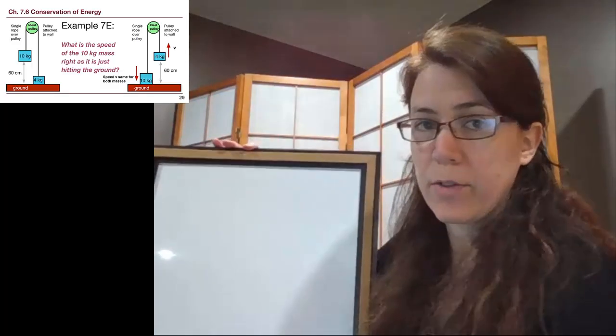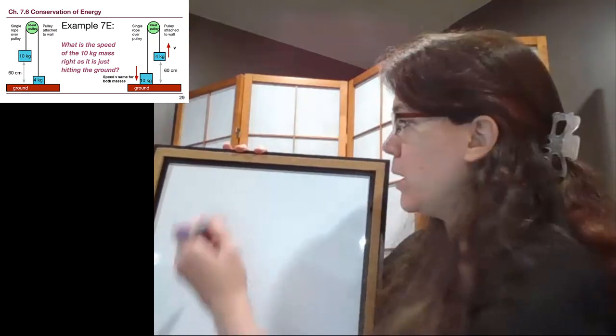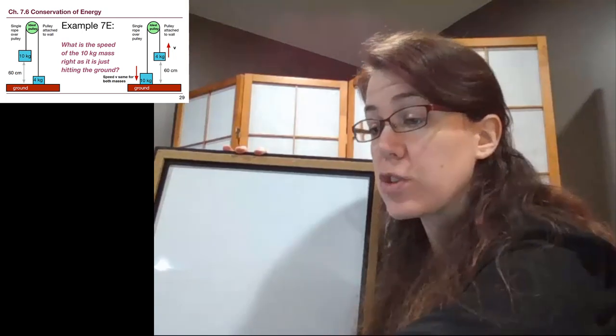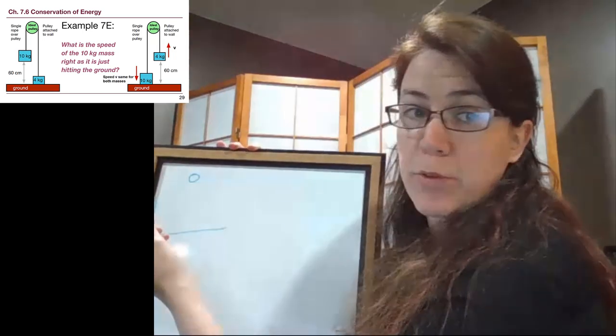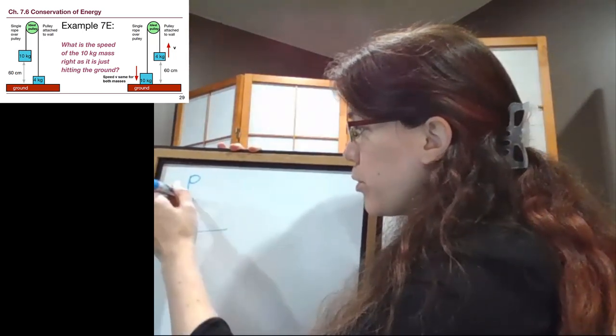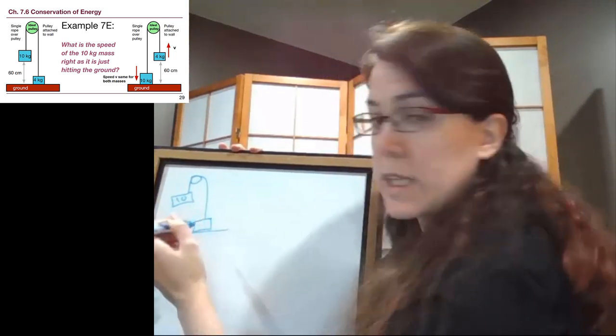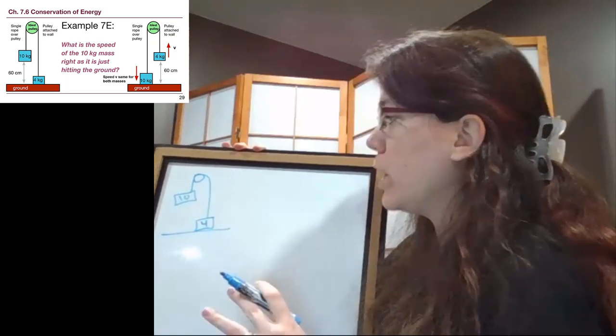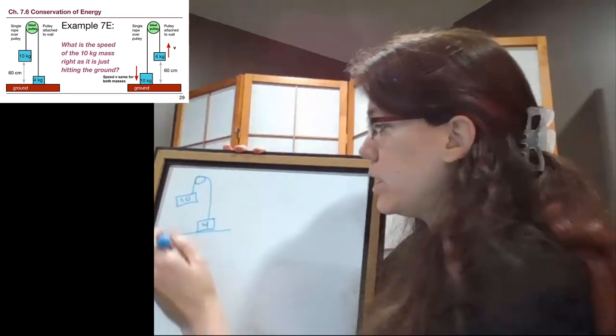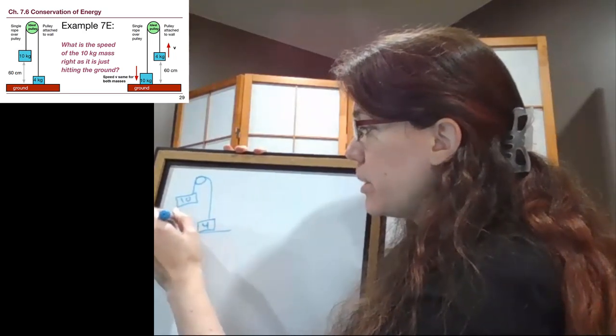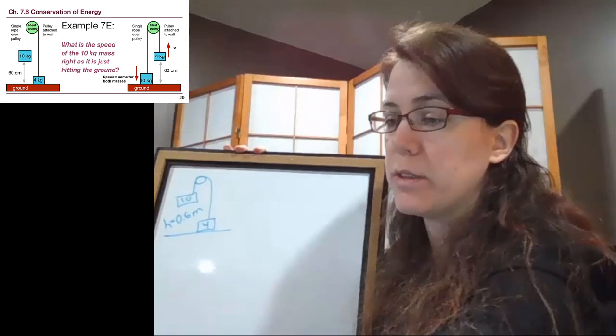We have the before and after picture on the slide already, so I'm going to draw it a little bit smaller up here because rather than having to circle what's before and what's after, there's enough happening in the problem that we just have the separate picture for before and after. In the before situation, the 10 kilogram block is up in the air, and the 4 kilogram block is not moving. We are holding this system in place until we start the problem, so nothing is moving, but this thing is higher in the air by a height of 60 centimeters, which is 0.6 meters.